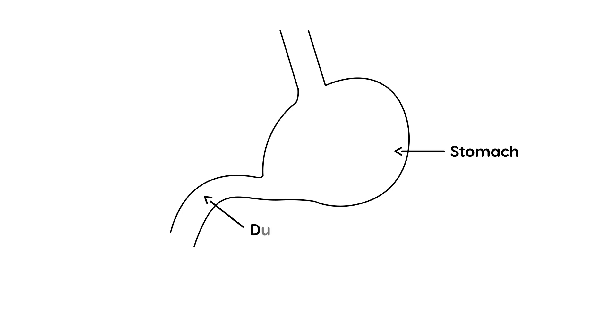Now atresia, the word atresia essentially means a complete blockage. So instead of there being a stenosis, a narrowing, there'll be a complete blockage like that, and then the bowel goes on from there. Obviously that's a huge problem, and what happens is this segment of the duodenum then dilates, so it becomes very big.